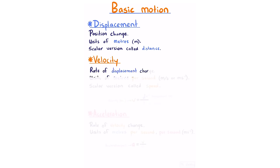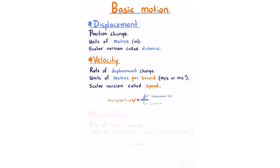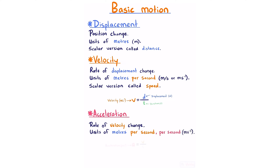Velocity is the rate of displacement change, measured in meters per second, written as ms⁻¹. The scalar version is called speed. The equation is: velocity equals displacement divided by duration. Acceleration is the rate of velocity change, measured in ms⁻², described by the equation: acceleration equals velocity divided by duration.